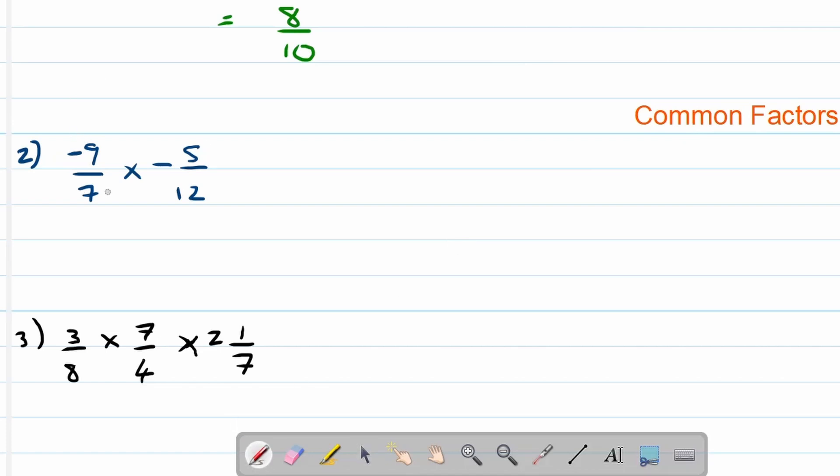Does 5 and 7 have common factors? No they don't. 9 and 12? Yes they do. 3 goes into 9 three times and into 12 four times. So we can write this down then as negative 3 over 7 times negative 5 over 4.